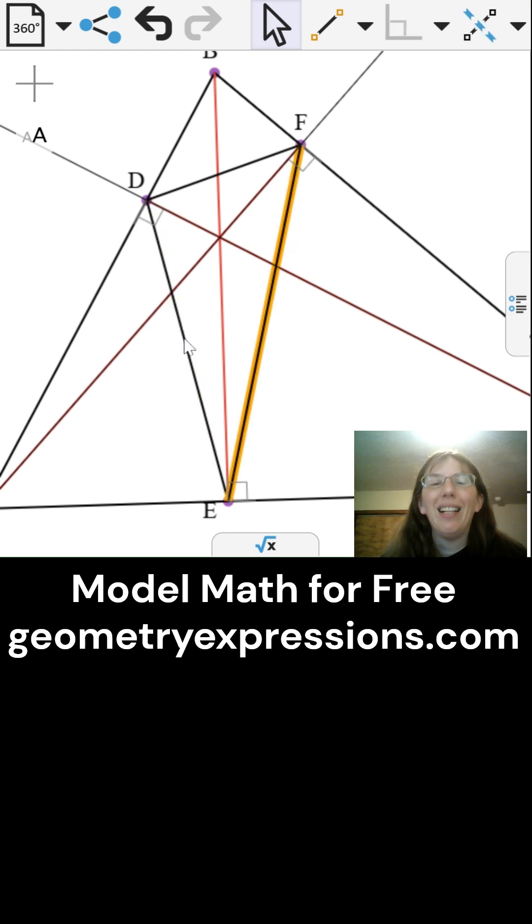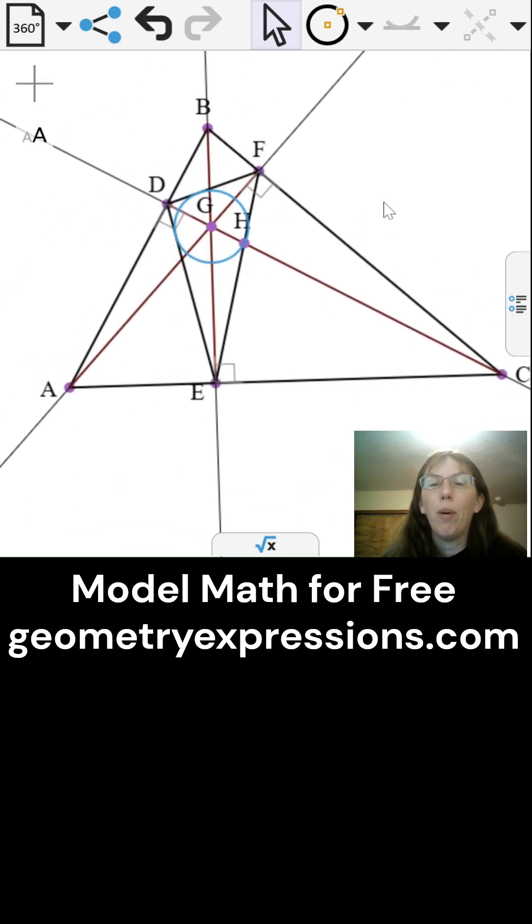Wow! Each angle bisector is the same line as the altitude for the larger triangle. Aha! The orthocenter of the larger triangle is the same point as the incenter of the smaller triangle.